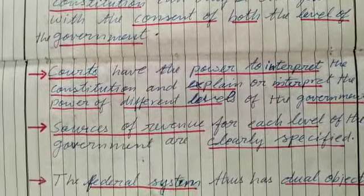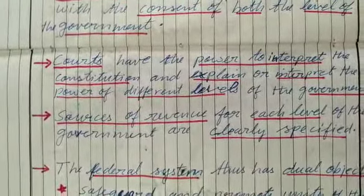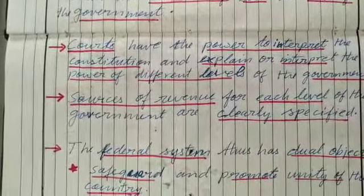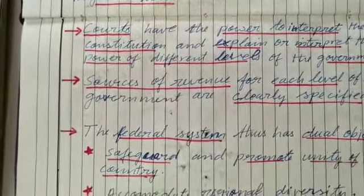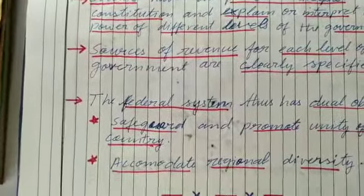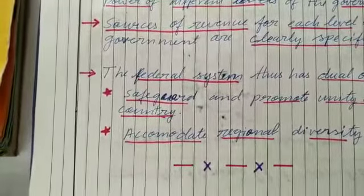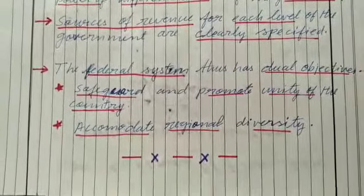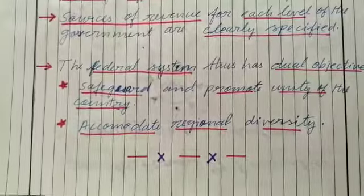Now what could happen if these two levels of government disagree on any subject, or if there is any kind of dispute between them? Courts have the power to interpret the constitution and explain the powers of different levels of government. Sources of revenue for each level of government are clearly specified. So in the federal system, it has dual objectives: one, to safeguard and promote the unity of the country, and two, to accommodate regional diversities.